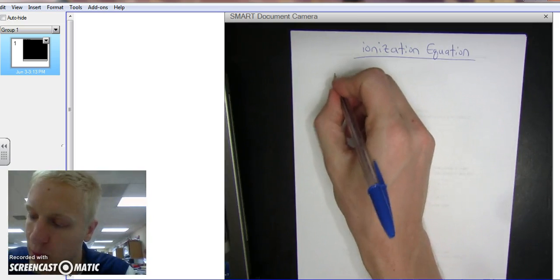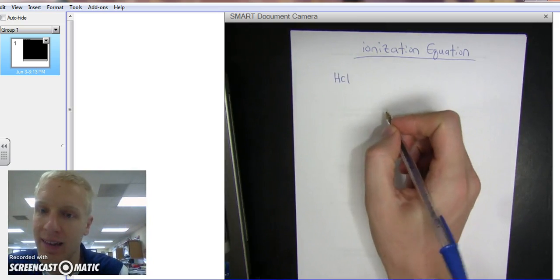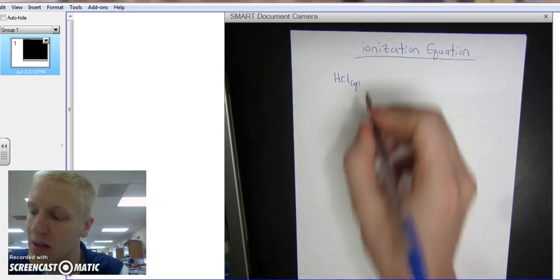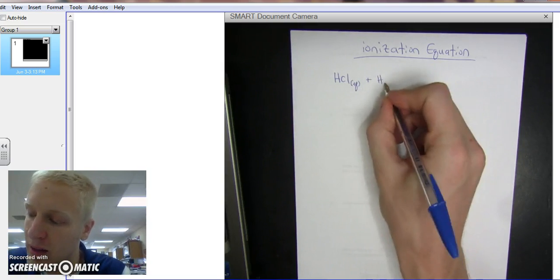So an example, a simple one would be just hydrochloric acid, HCl. It's aqueous, meaning it dissolves in solution, and you're going to add liquid H2O.